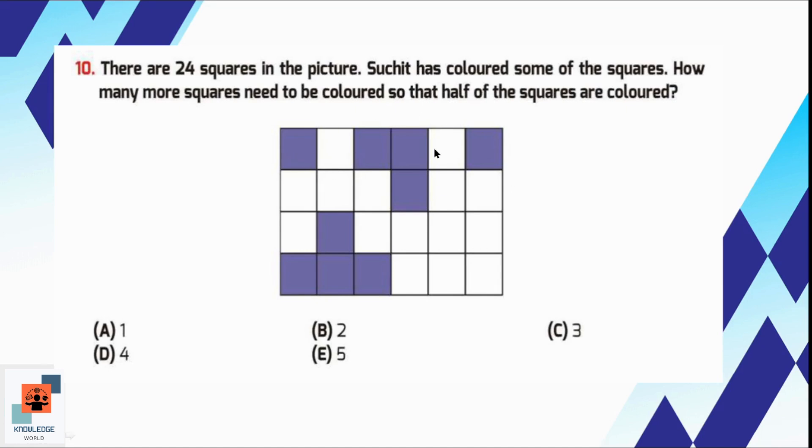It's 1, 2, 3, 4, 5, 6. 6 plus 6 is 12, 12 plus 6 is 18, and 18 plus 6 is 24. So there are 24 squares. Half of 24 is 12. It means 12 squares should be coloured and 12 squares should be uncoloured. Now let's calculate the number of coloured squares. It's 1, 2, 3, 4, 5, 6, 7, 8, 9. So we will see that 9 plus what is equal to 12, because 9 are coloured but we need to colour 12 squares. 9 plus what is equal to 12? It's 3. So we need to colour 3 more squares to exactly colour half of the given picture. So option C is the correct option here.